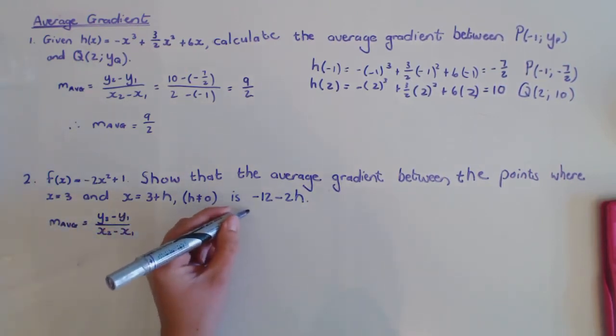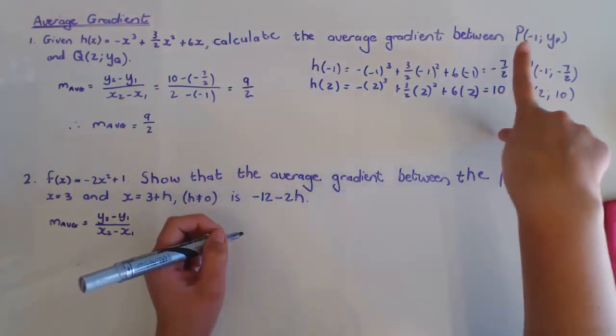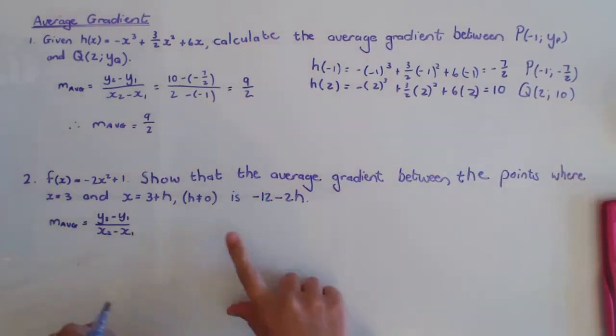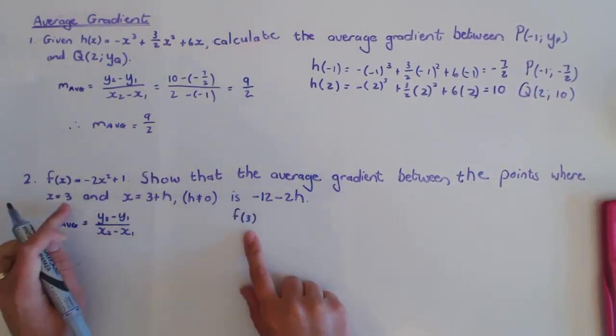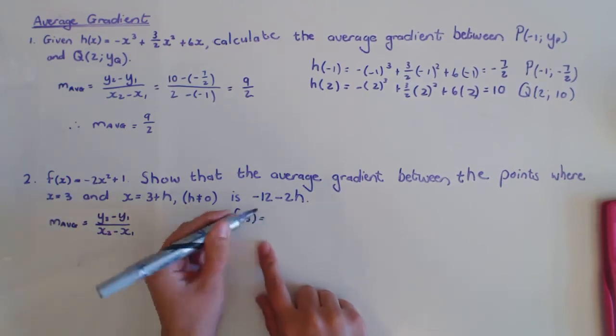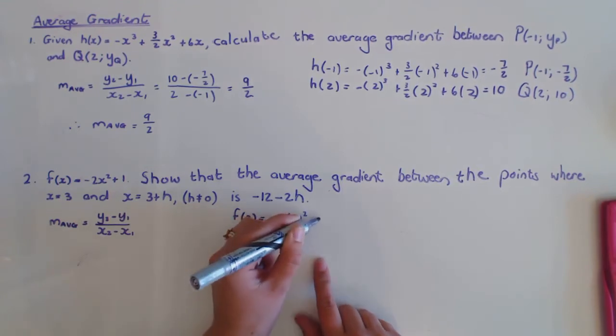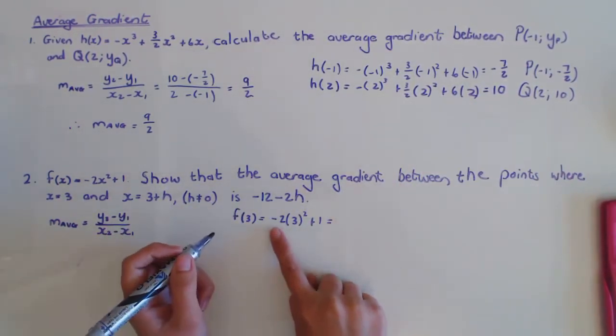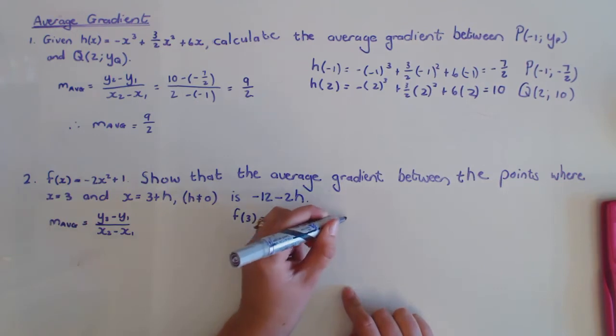So what I'm going to do is I'm going to take, like I did there, h in this x value and h in the other x value, those are my y values. So I'm going to take f in the place of 3, which is the first one, and that would just be -2(3)² + 1, just like I did with this one. And this is -17.